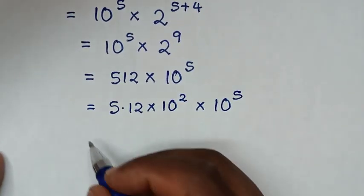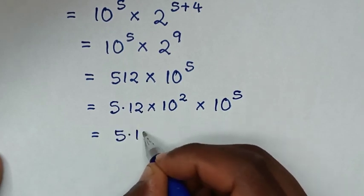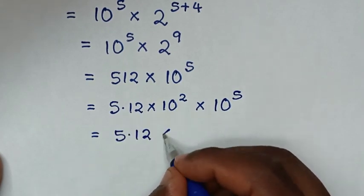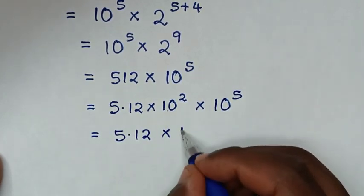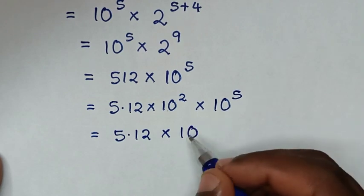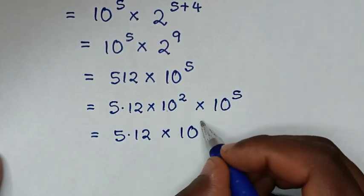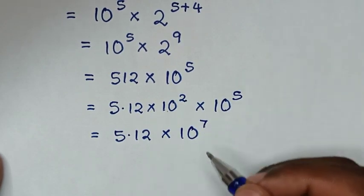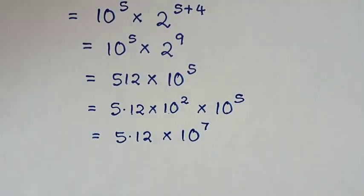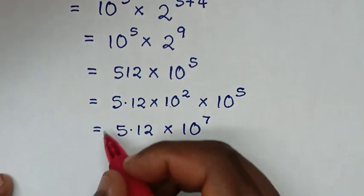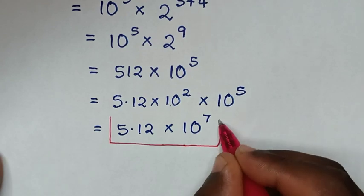So it will be equal to 5.12 times 10, same base of 10, power of 2 plus 5, which is power of 7. Therefore, 5 power 5 times 4 power 7 equals 5.12 times 10 power 7. This is our final answer.